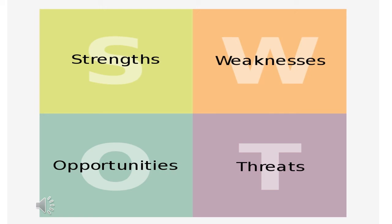Strengths and weaknesses belong to internal factors, meaning things already experienced within the company — such as financial resources, physical resources like location, facilities, and equipment, and human resources like employees and volunteers. Opportunities and threats belong to external factors — things that cannot be controlled or predicted, such as market trends or new technology advancements and new products arriving in the market.